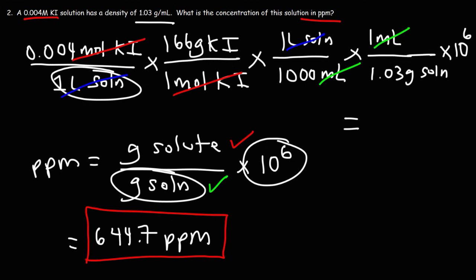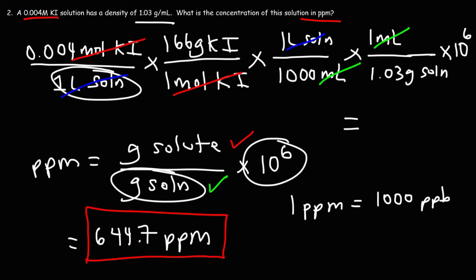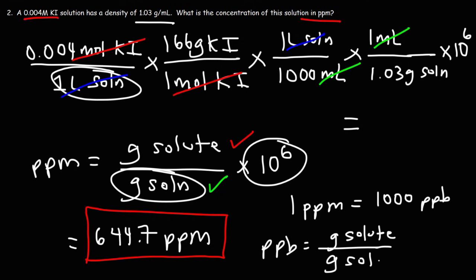If you want to convert from molarity to PPB instead, it's important to understand that 1 PPM equals 1,000 parts per billion. So you can take the answer and multiply it by 1,000, or instead of using 10 to the sixth, use 10 to the ninth. The PPB formula is grams of solute divided by grams of solution times 10 to the ninth, since a billion is 10 to the ninth and a million is 10 to the sixth.